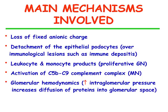There is a loss of fixed anionic charge, detachment of the epithelial podocytes, leukocyte and monocyte products which are active especially in proliferative glomerulonephritis, activation of the pro-inflammatory C5b-C9 complement complex which has been found active especially in membranous nephropathy. And there also are glomerular hemodynamics involved, which are very important especially for management of proteinuria, because in glomerular diseases there is very frequently documented an increase in glomerular pressure, which increases diffusion of proteins into glomerular space.